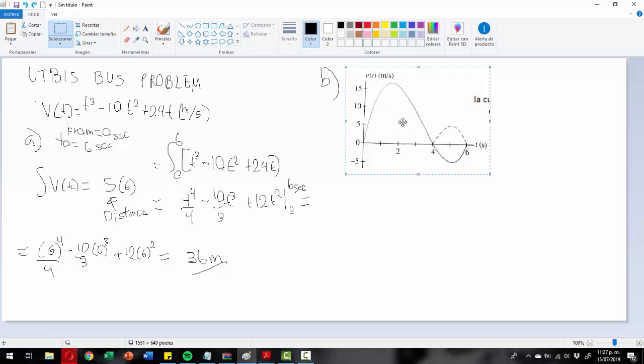So this area has to do with the displacement that goes back. This one is one way and then the bus is going to come back. So let's see how much is this area and let's see how much is this area. So in order to do that we need first...